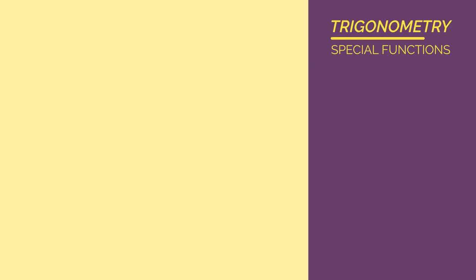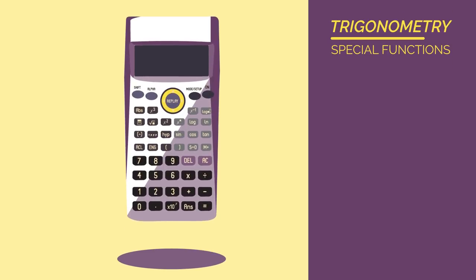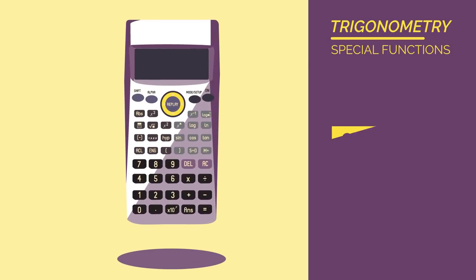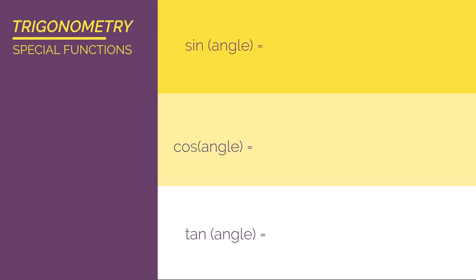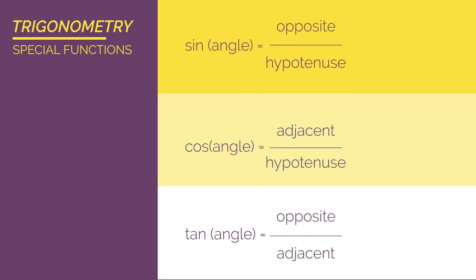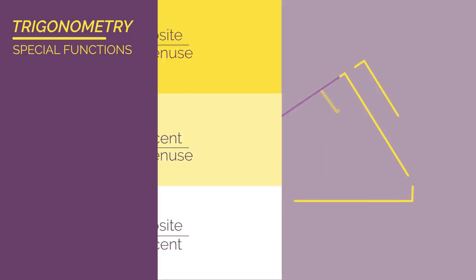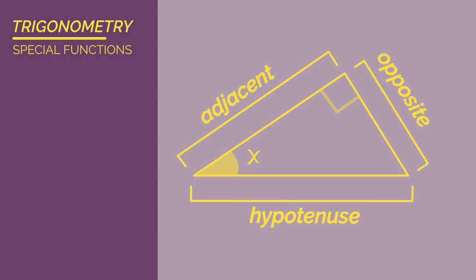There are three main functions in trigonometry: sine, cosine, and tangent — but we just call them sin, cos, and tan, which is how they are labeled on your calculator. These functions are just ratios between sides and angles on right angle triangles, so we need to firstly know which side is the hypotenuse, which is the opposite, and which is the adjacent.